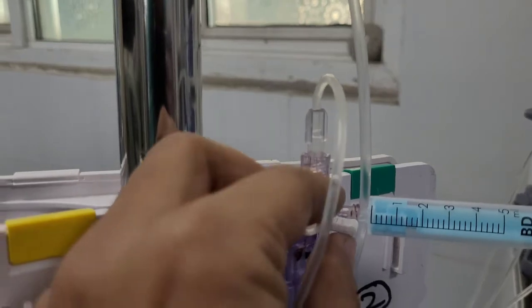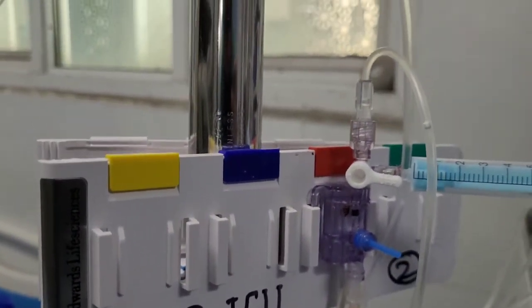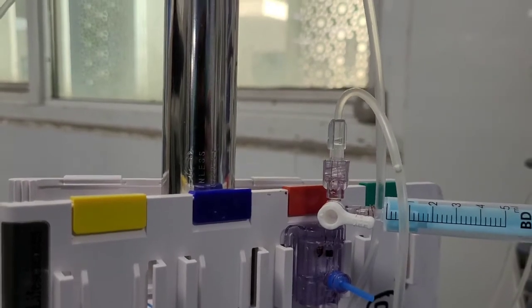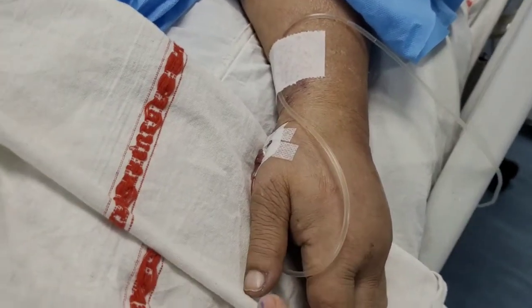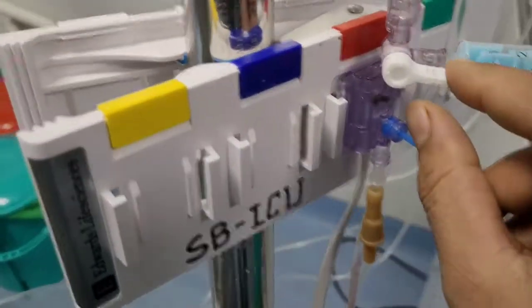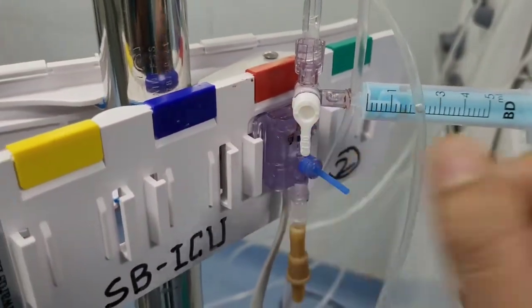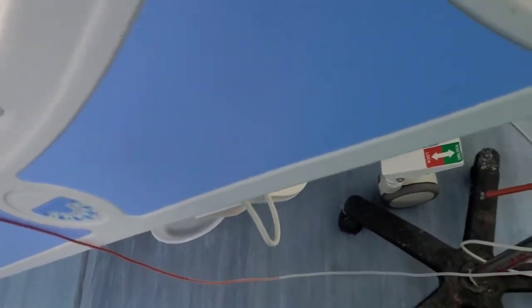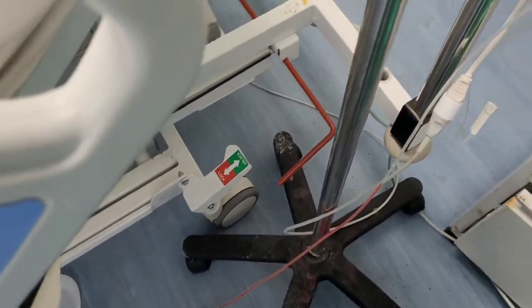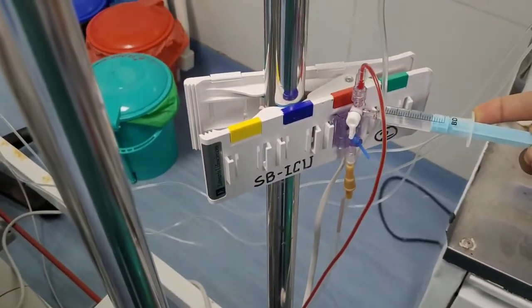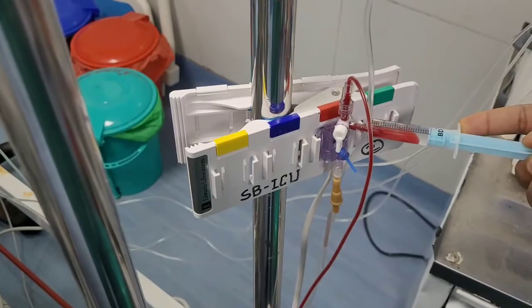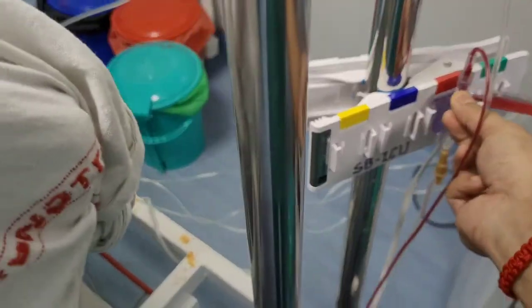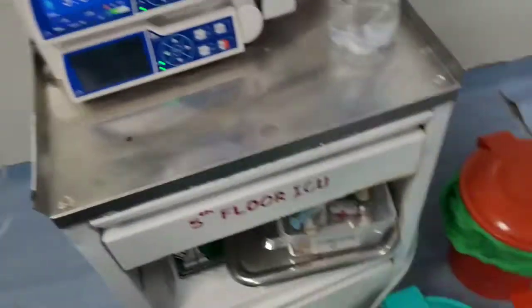Now I will show you how to zero this arterial line and show the BP. First we have to aspirate this blood, which might be clotted. We will aspirate by turning this off, and you will see blood will come. We will discard this blood.